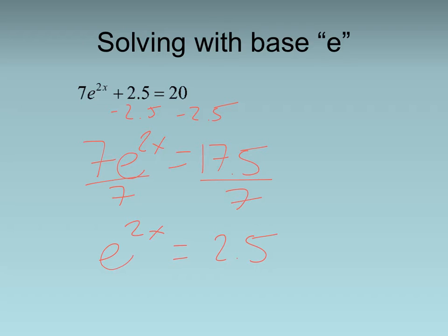Then what I'll do is I'll take the natural log of both sides. Whatever I do to one side, I have to do to the other. These guys cancel and I'm left with 2x.